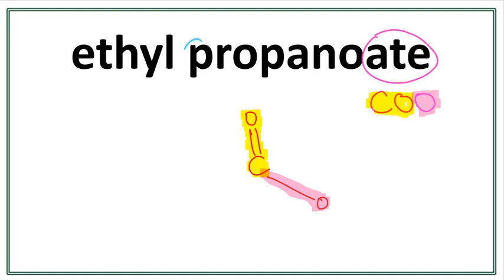Let's work on the parent chain. This 'prop' tells us that there are three carbons in the parent chain. So let's draw the parent chain. A trick to draw this is that you always count till one less than the number of carbons you want to draw, and the parent chain always attaches with the carbon in the COO group.